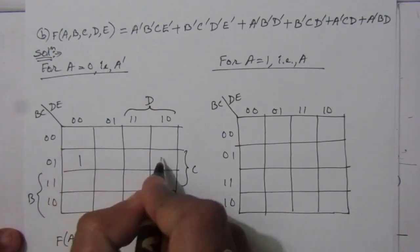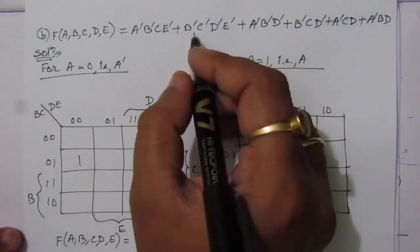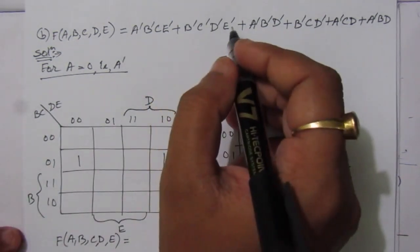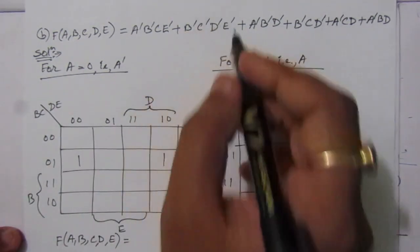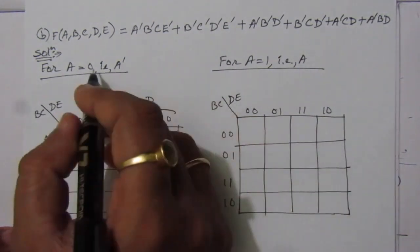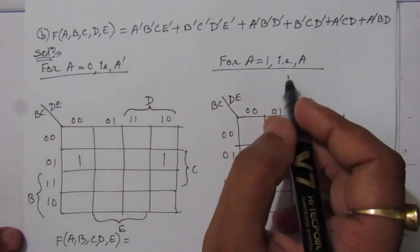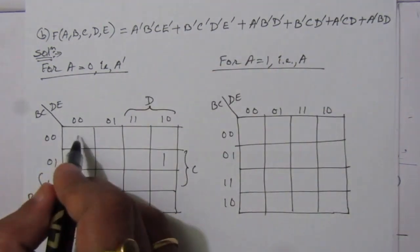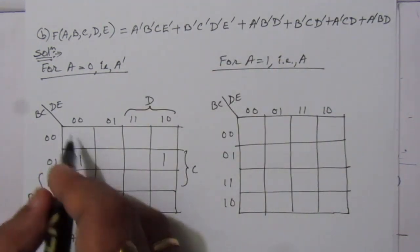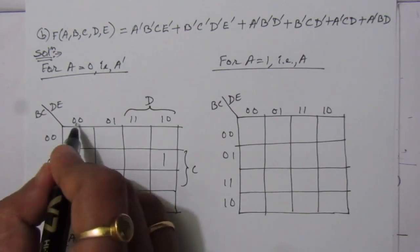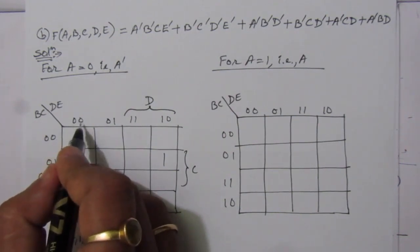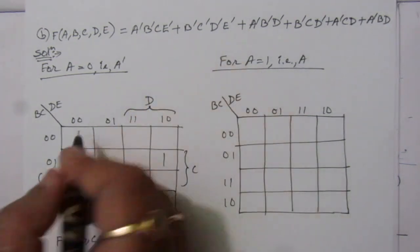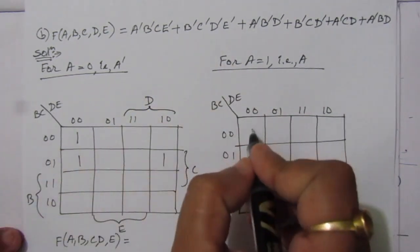For the second term B-bar C-bar D-bar E-bar: we do not have A, which means we have to fill up this value in both tables — for A equal to 0 as well as A equal to 1. B-bar C-bar D-bar E-bar — whenever we have 0 that means it is complement — so we fill up this cell in both tables.